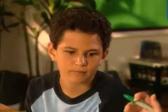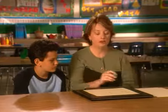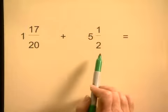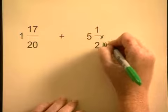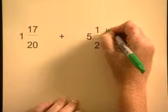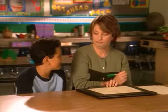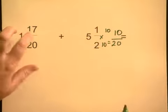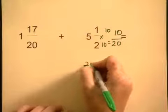Now we have mixed numbers. Same process — we just do them as two separate problems: we do the fractions, then we'll do the whole numbers. We need a common denominator here. We have 20 and we have 2. Can we multiply 2 by something to make it into 20? 10. So let's do 2 times 10, which is 20. If you did it to the denominator, you have to do it to the numerator. So 1 times 10 is 10. Now let's add our fractions. 17 plus 10 is 27 twentieths.